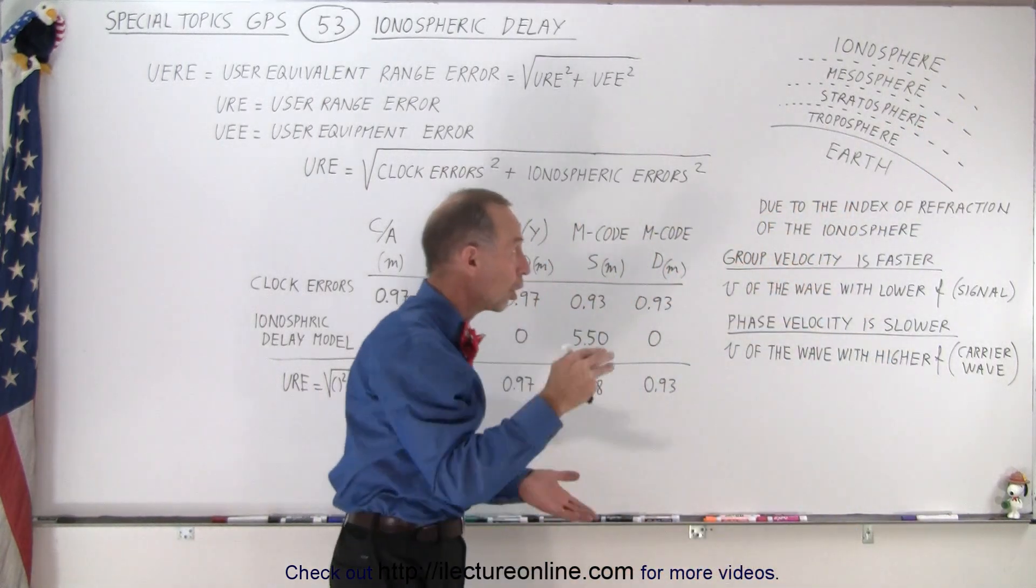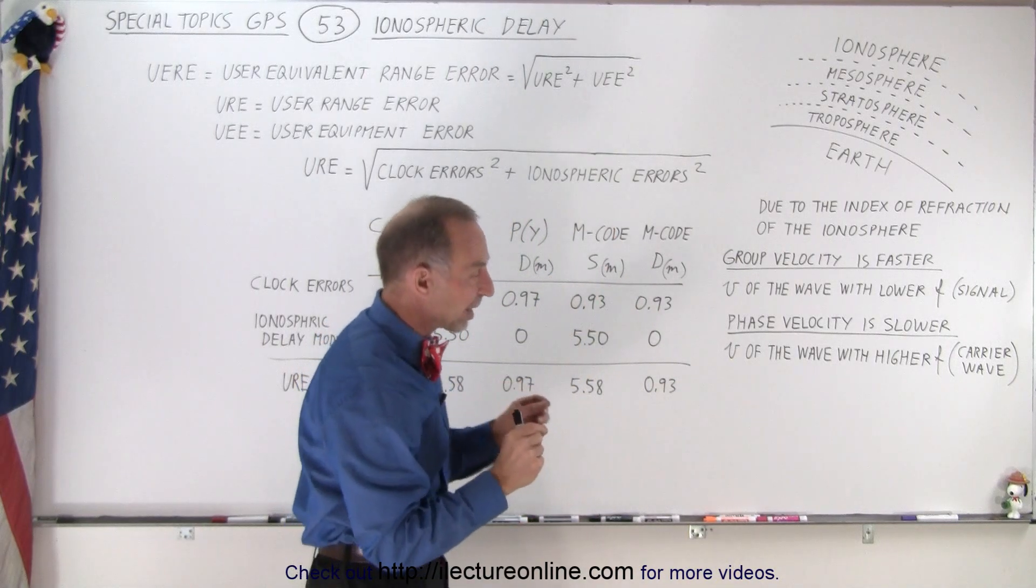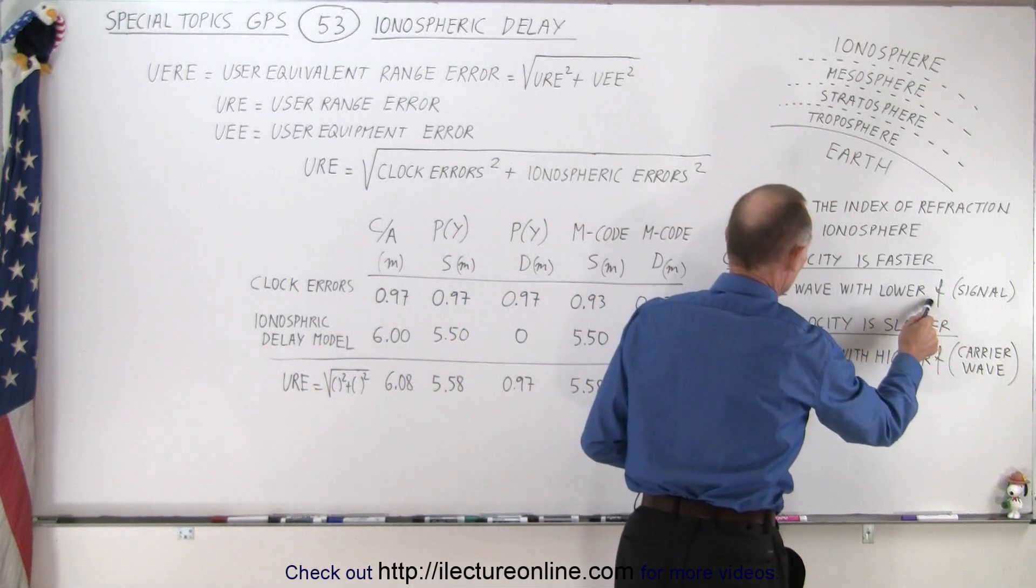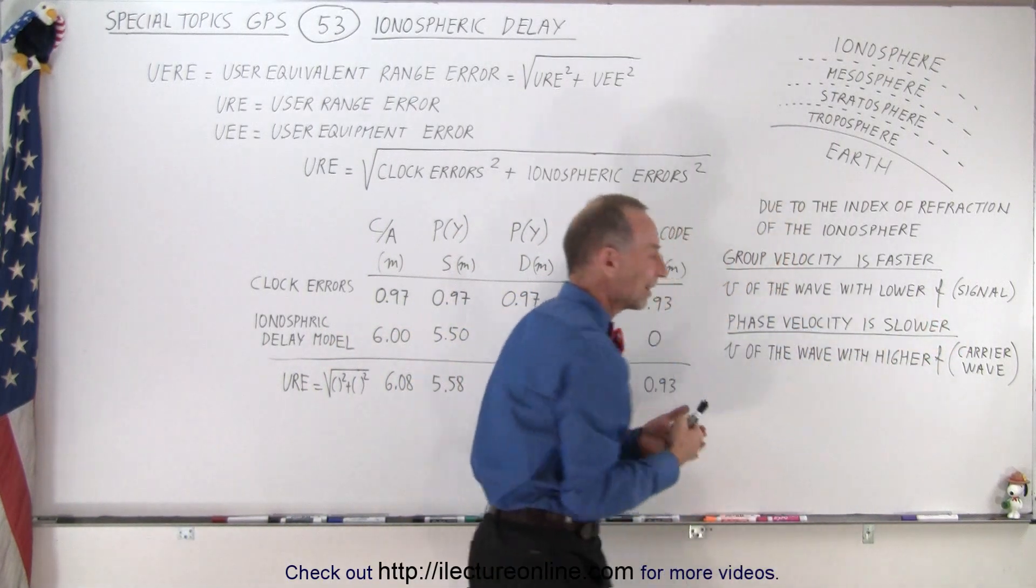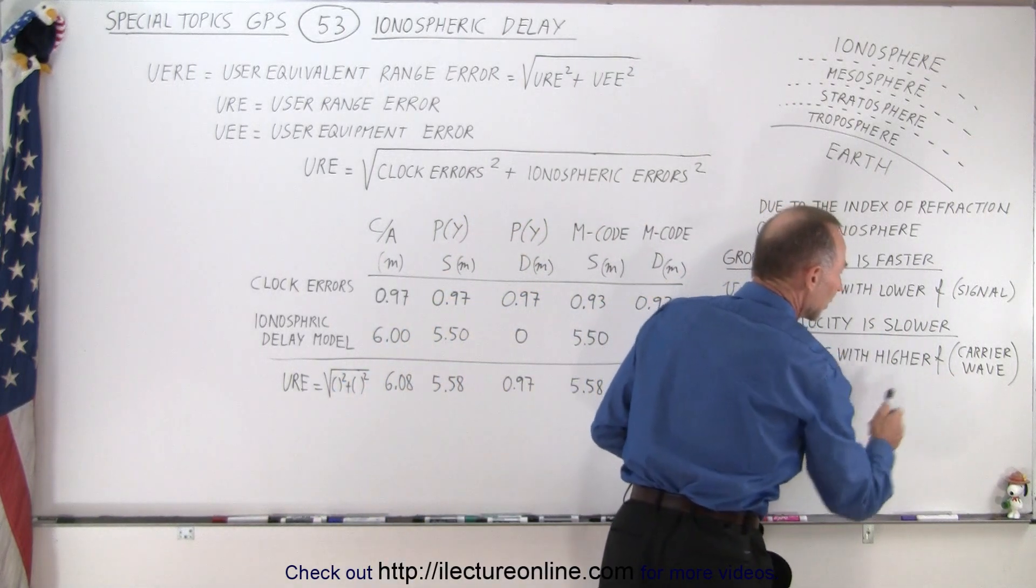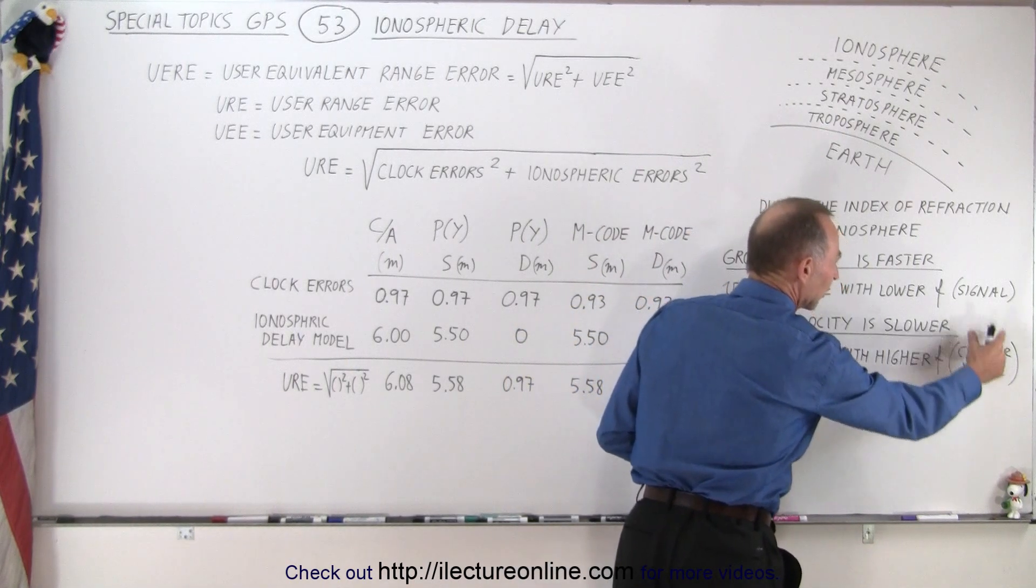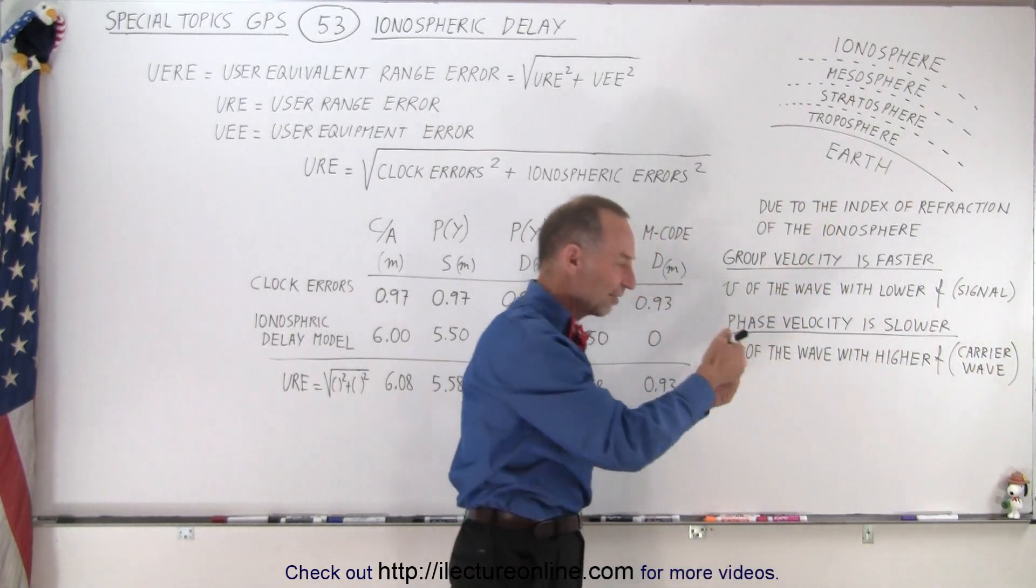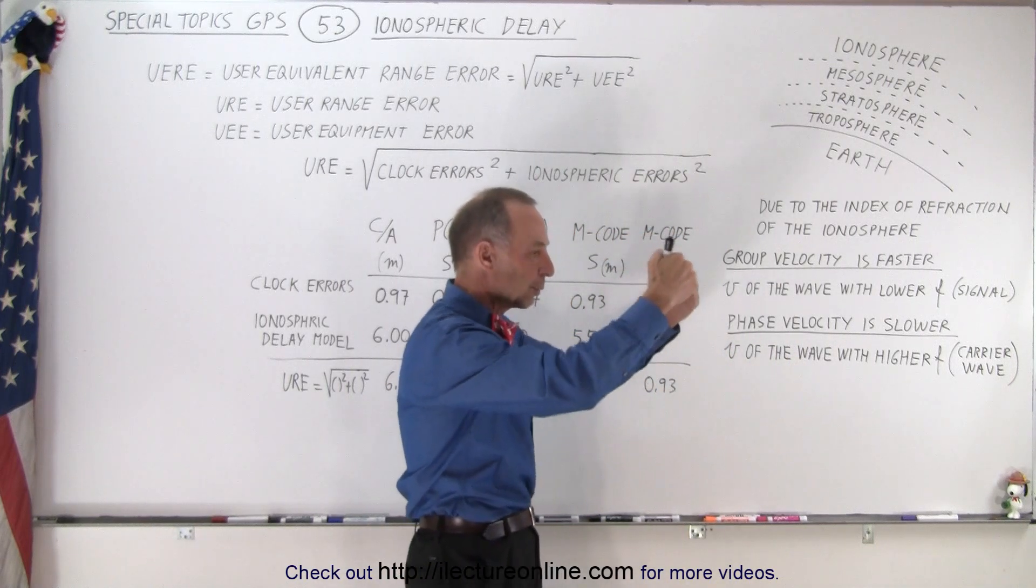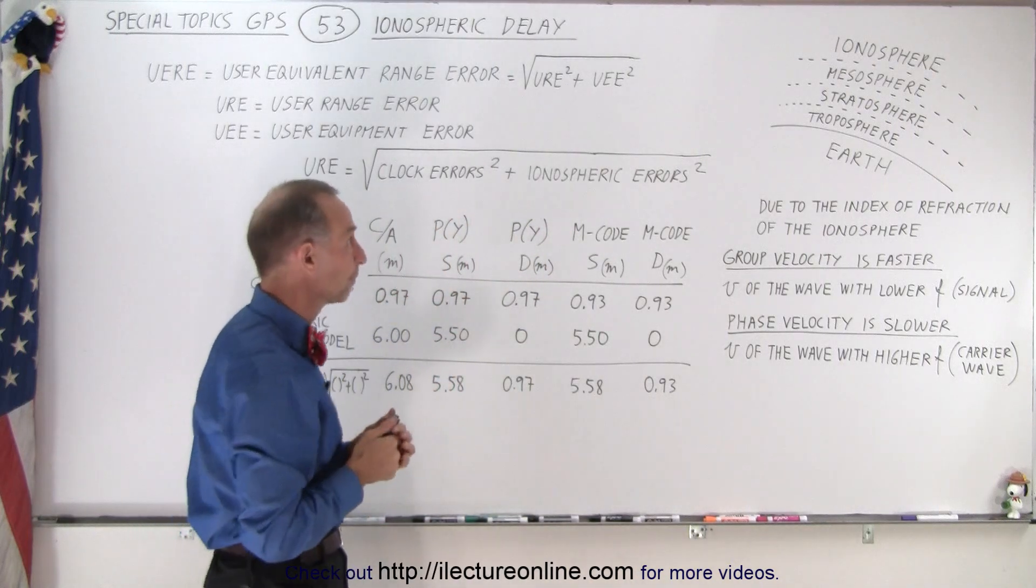The ionosphere is quite a long distance to travel through. If the index of refraction is such that the signal, which has a lower frequency, therefore has less of an index of refraction than the carrier wave, which has a higher frequency, the carrier wave moves slower through the ionosphere than the signal, and therefore you have the separation in the timing as the signal and the carrier wave reach the receiver. And that needs to be accounted for.